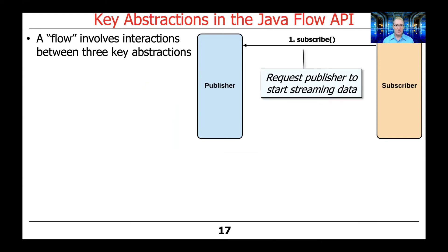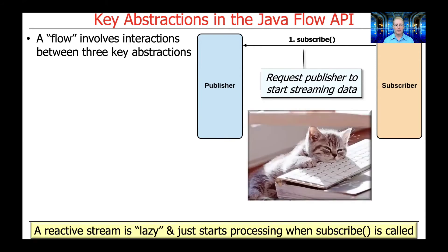The way things typically start out is a subscriber object will come along and subscribe to a publisher, which basically requests the publisher to start pushing a stream of data events to it. One of the things to remember about reactive streams is that they're inherently lazy — they don't actually start to do anything until subscribe or some variant of subscribe is actually called. So nothing happens until subscribe is invoked.